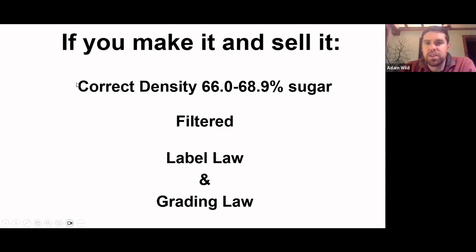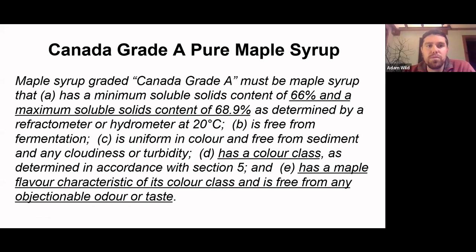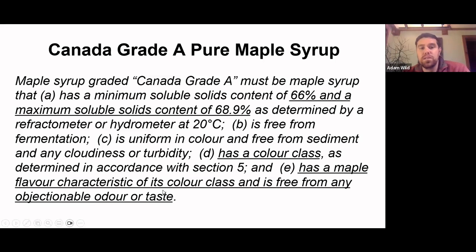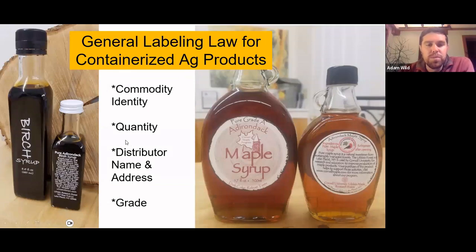The biggest standard is making sure it's cooked to the correct density — 66% to 68.9% sugar. In Nova Scotia, that's the density it needs to be. You also need to make sure there are no off flavors and that it has the standard typical flavors of maple syrup. It needs to be filtered. For Canada, Grade A pure maple syrup has that density of 66% to 68.9%, is uniform in color, free from sediment, cloudiness or turbidity, has a color class as determined by grade standards, and has the flavor characteristics of that color class with no odors or foul tastes.